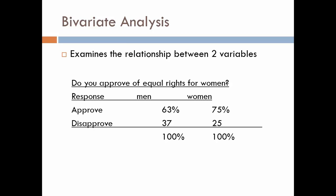This is Data Processing 2. We're going to start with bivariate analysis. Bivariate analysis means examining the relationship between two variables.